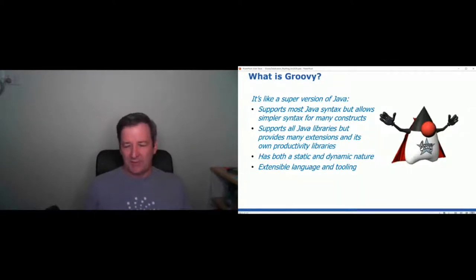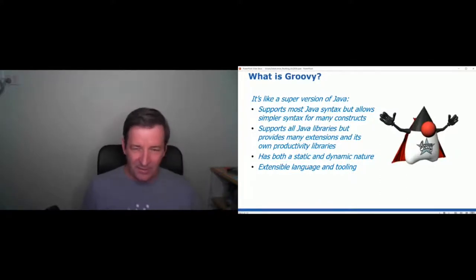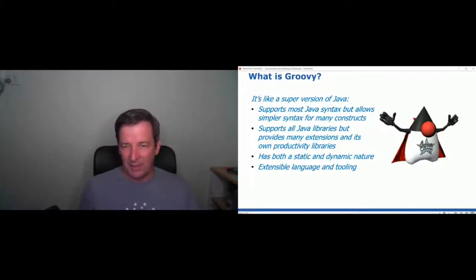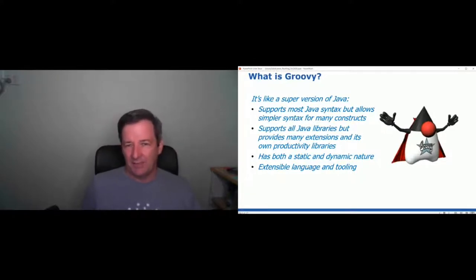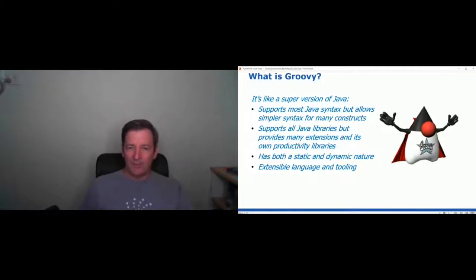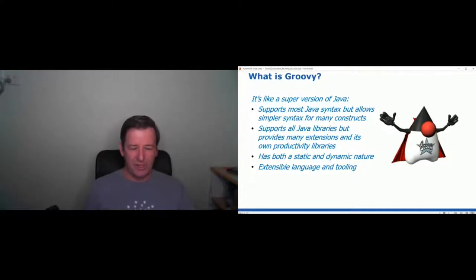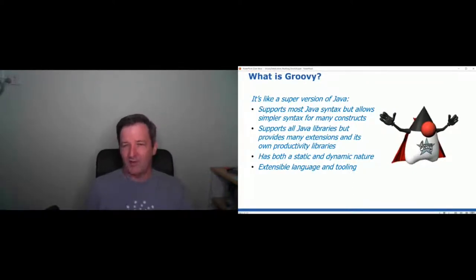Groovy's syntax is very much designed to be like Java, so a Java developer would feel very familiar with it. But it's designed to be simpler in many scenarios and to have enhanced productivity features. It has both a static and a dynamic nature — Java is a statically typed language, while something like Ruby or Python is a dynamic language, and Groovy spans both those worlds. It originally came about to offer features found in dynamic languages to Java programmers, but these days you can do either nature in Groovy if you want, and it meshes in really nicely in a mixed-language project.